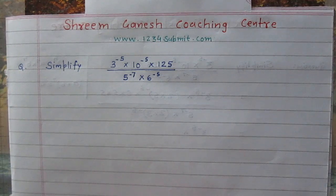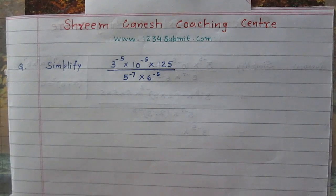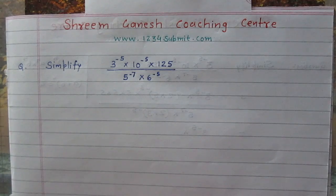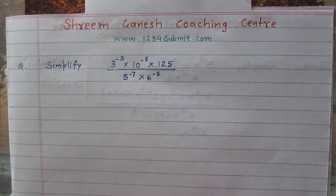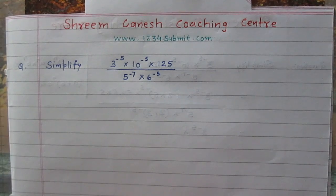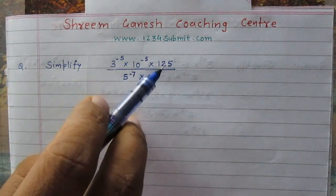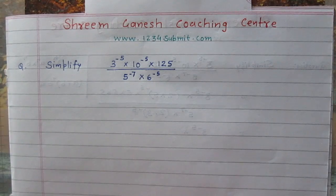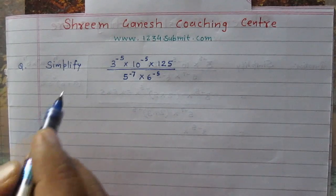Simplify 3 raised to power minus 5, multiplied by 10 raised to power minus 5, multiplied by 125, all divided by 5 raised to power minus 7, then multiplied by 6 raised to power minus 5. We see that 3 and 5 cannot be factorized, but 10, 125, and 6 we can factorize, so let us proceed.